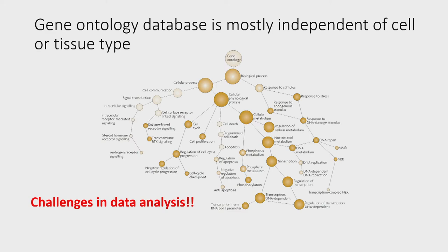Characterizing gene function can be challenging for many reasons — for example, the redundancy in genes accounting for each other, or because of the polytropic nature of gene functions. But I truly believe that challenges in data analysis are a major obstacle. With better bioinformatics tools, we would be able to learn much more about gene functions from existing data and existing experimental tools than we currently can.